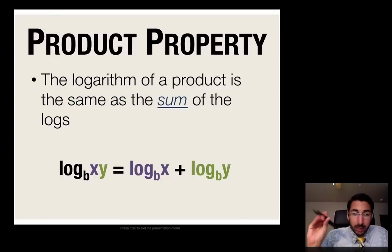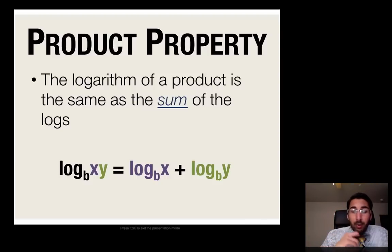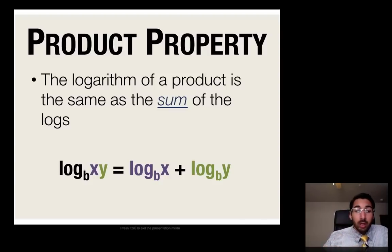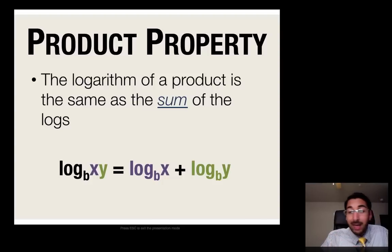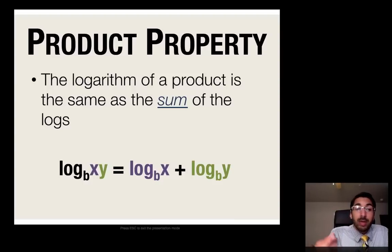The logarithm of a product is the same as the sum of the logs. So whenever we have a product inside a log, we can break it up into a sum of more logs, and vice versa — a sum of logs can be put together using the product property. The general formula is: log base b of xy equals log base b of x plus log base b of y. Notice I kept the same bases, but I broke the product apart using addition.